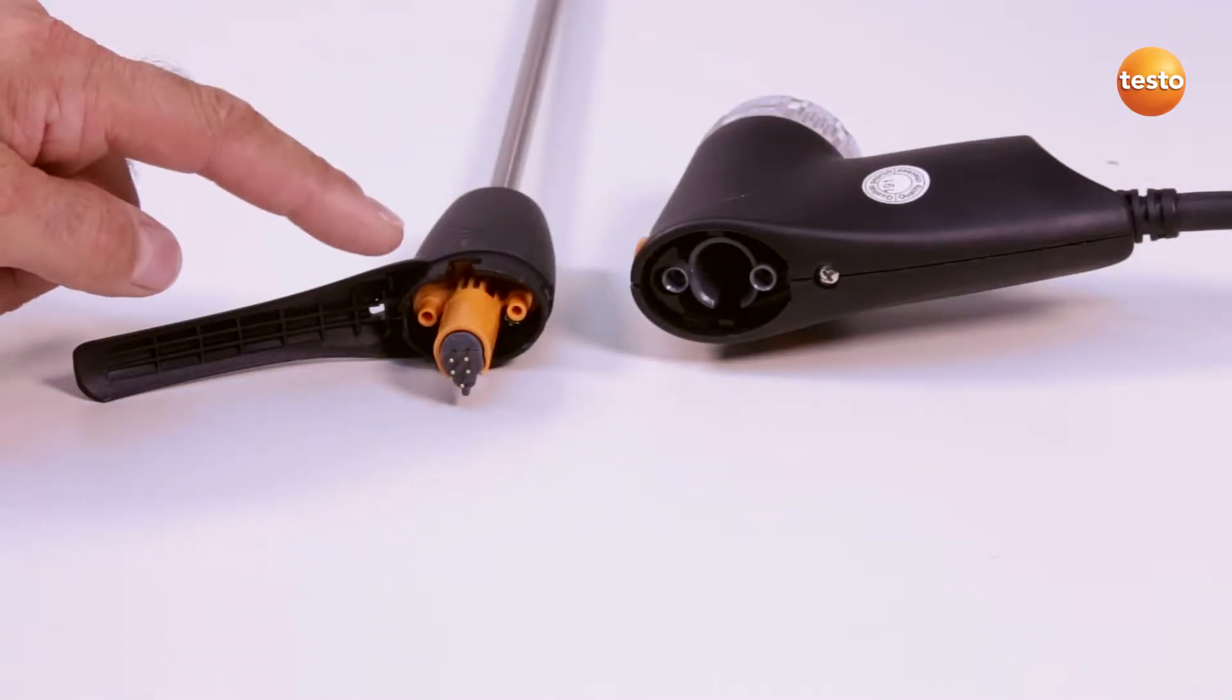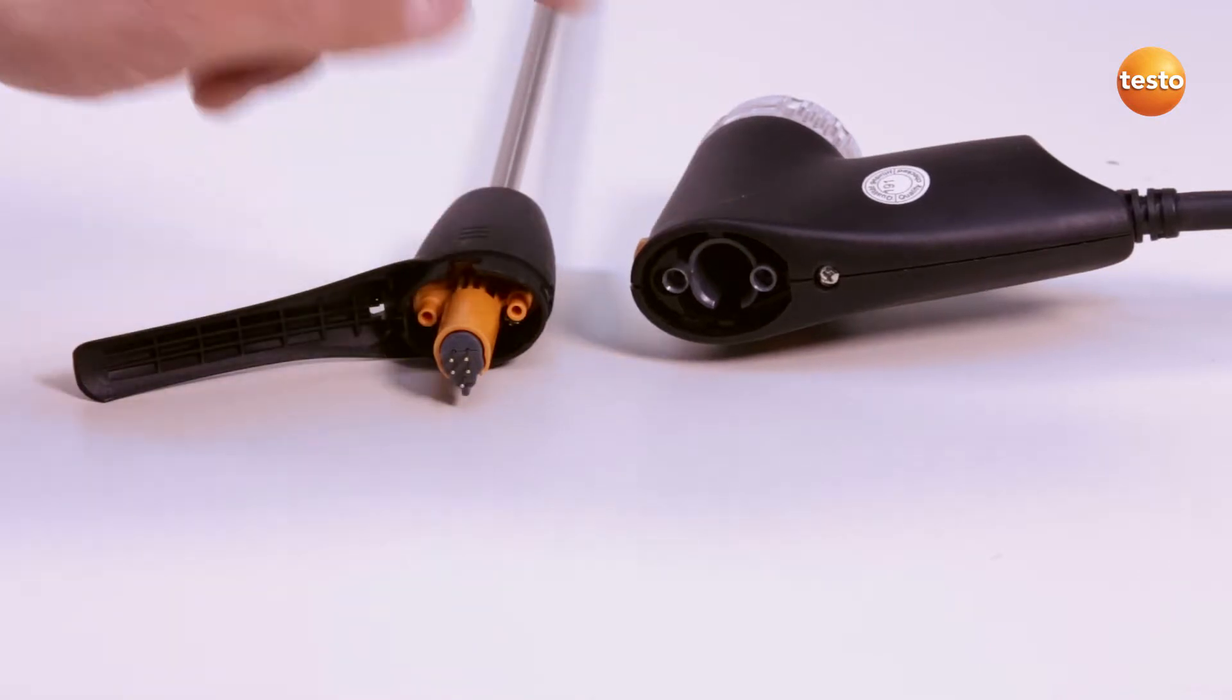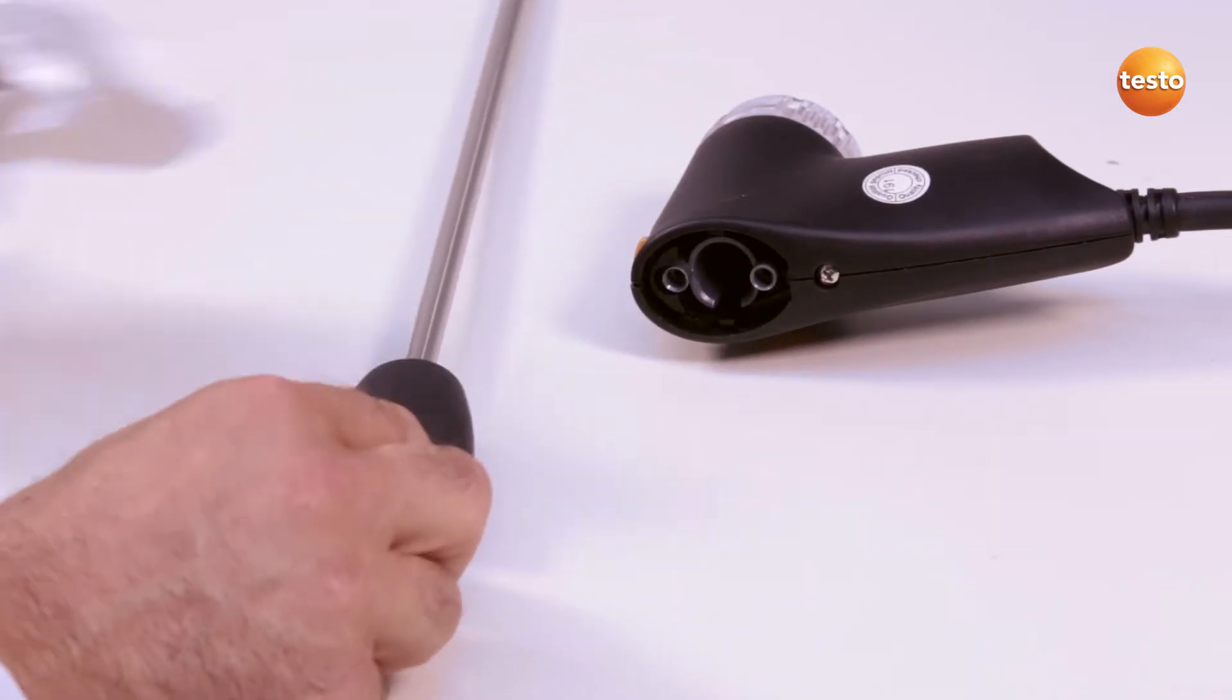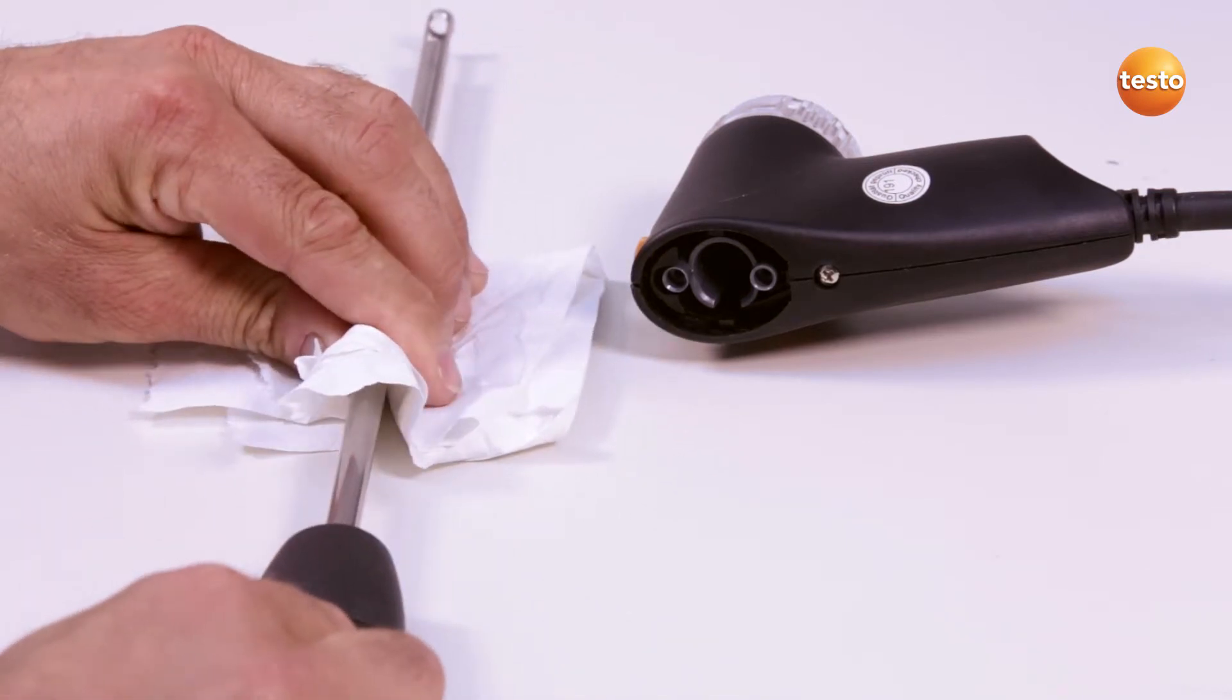The flue gas ducts in the probe shaft and the probe handle can be cleaned out using compressed air. External cleaning is done with a cloth. Brushes should not be used.